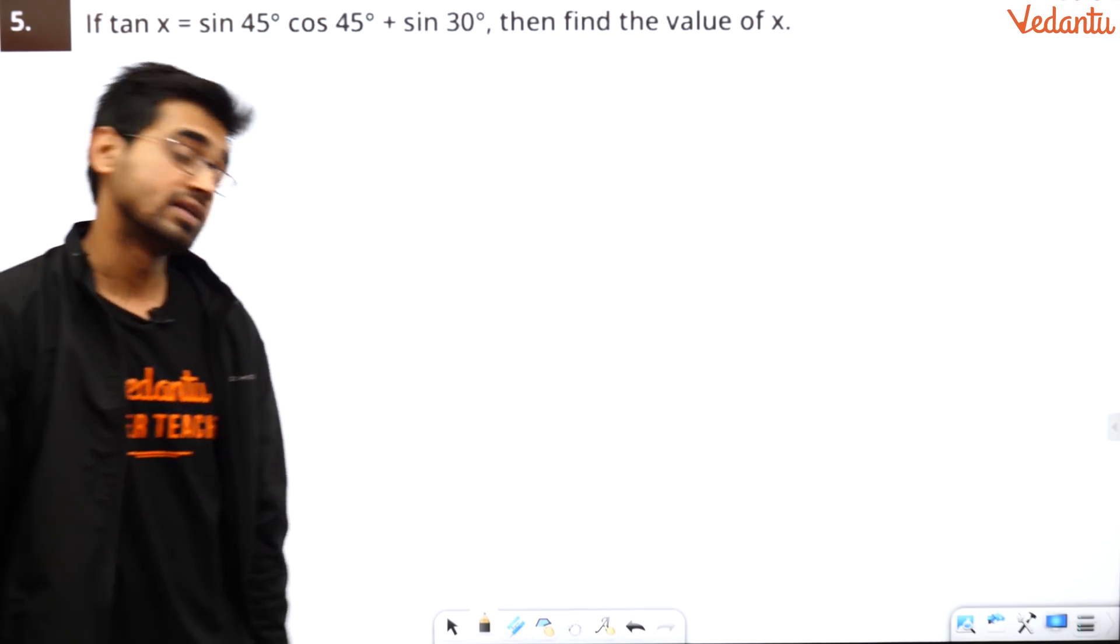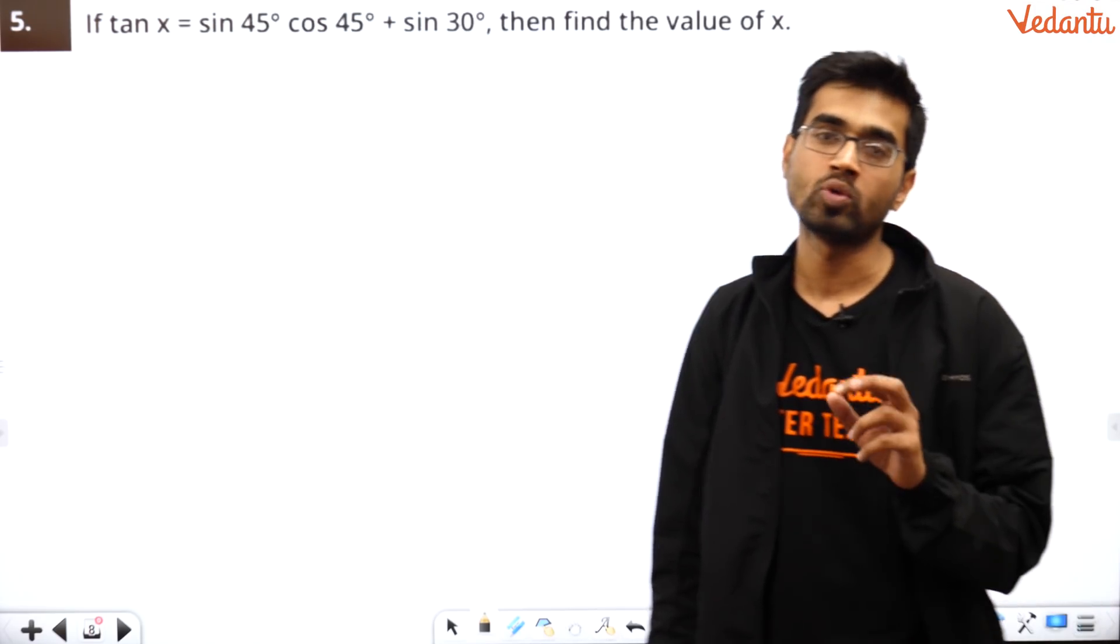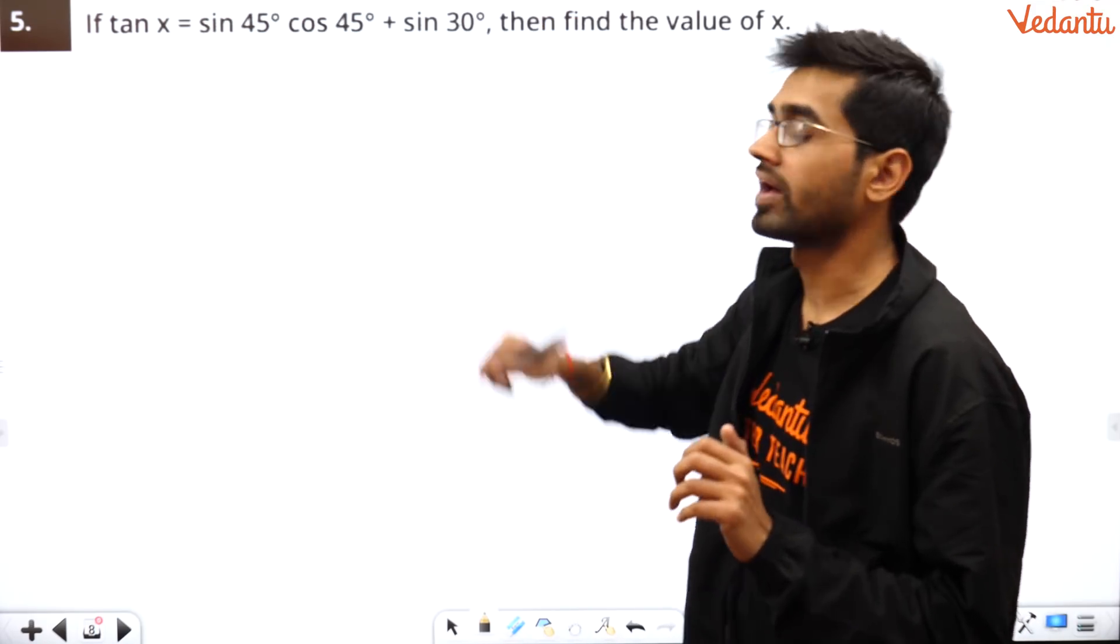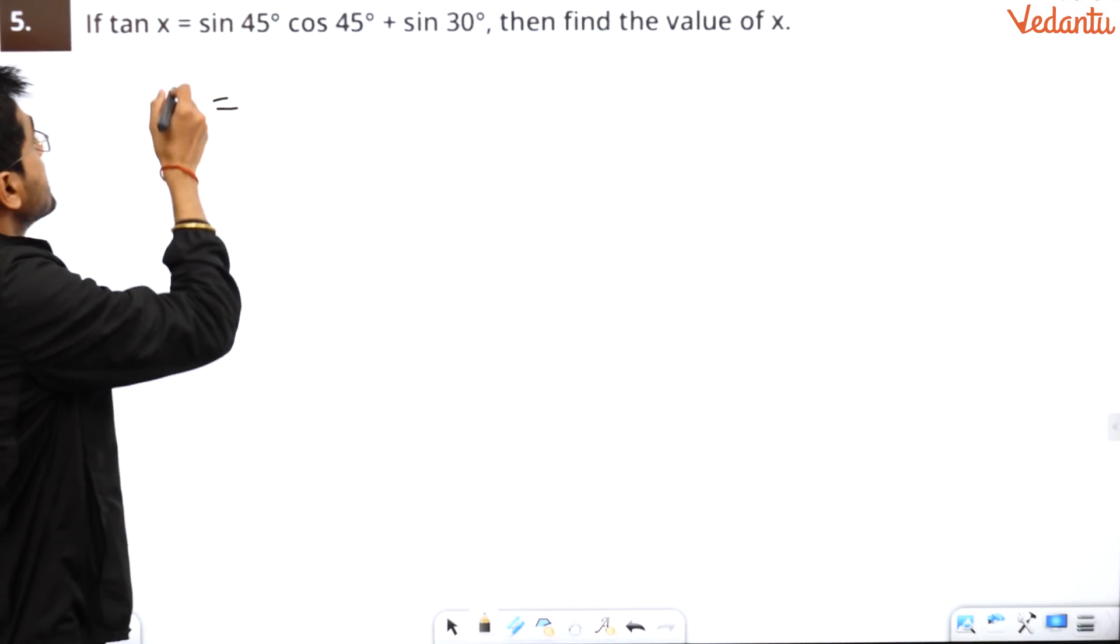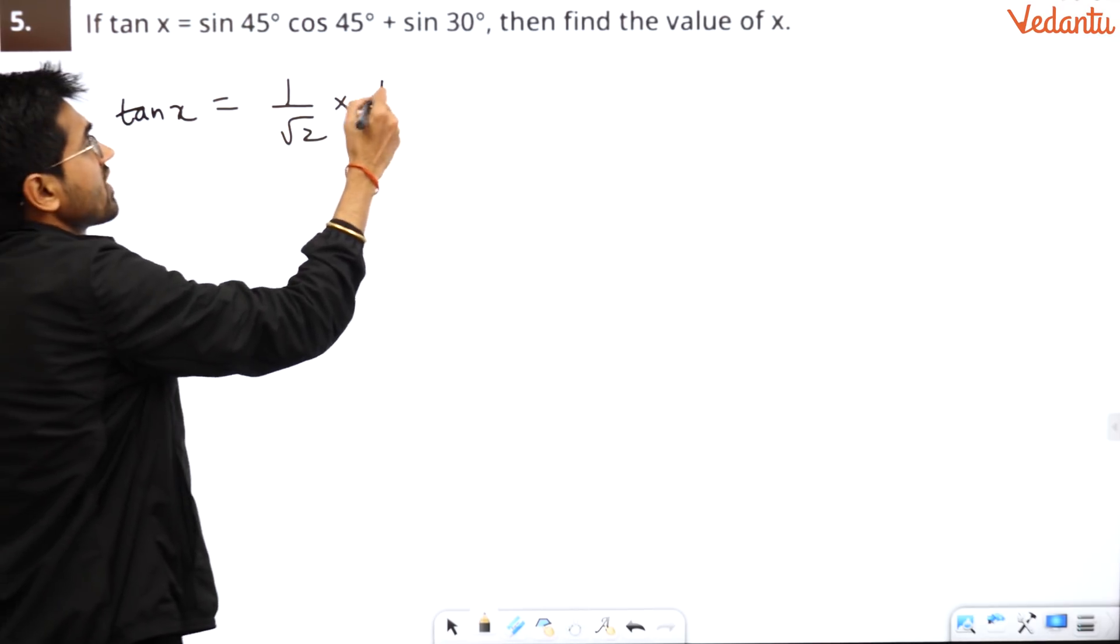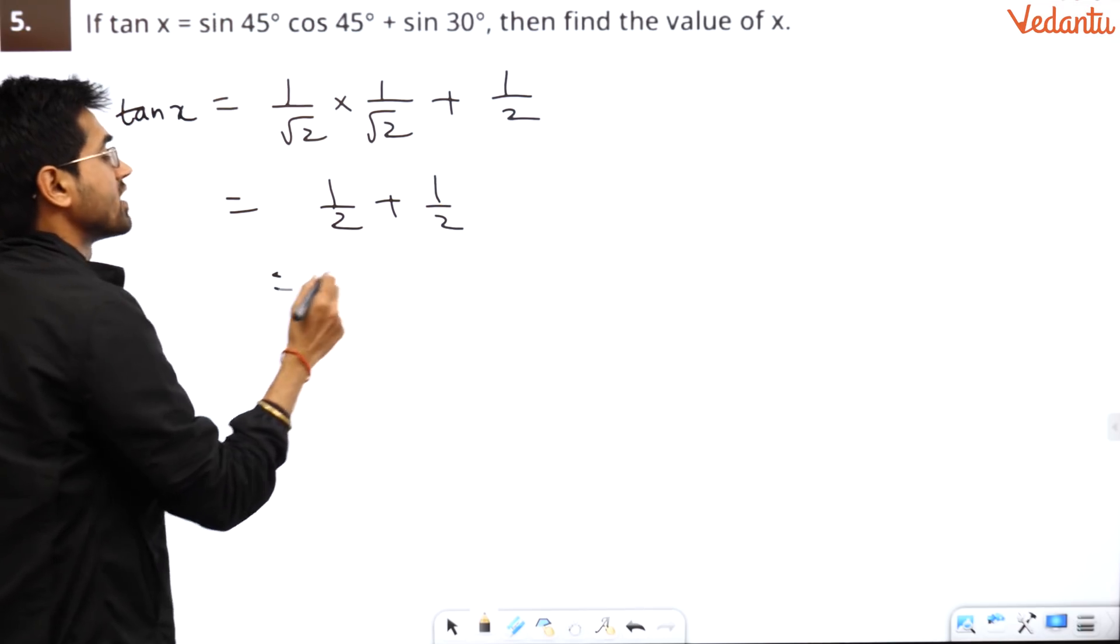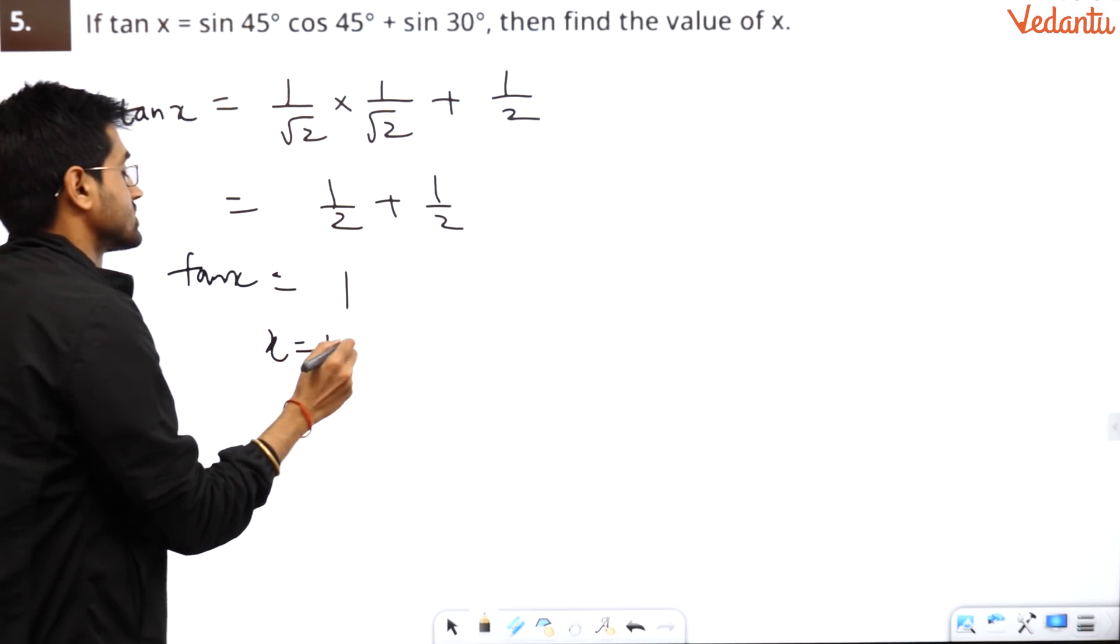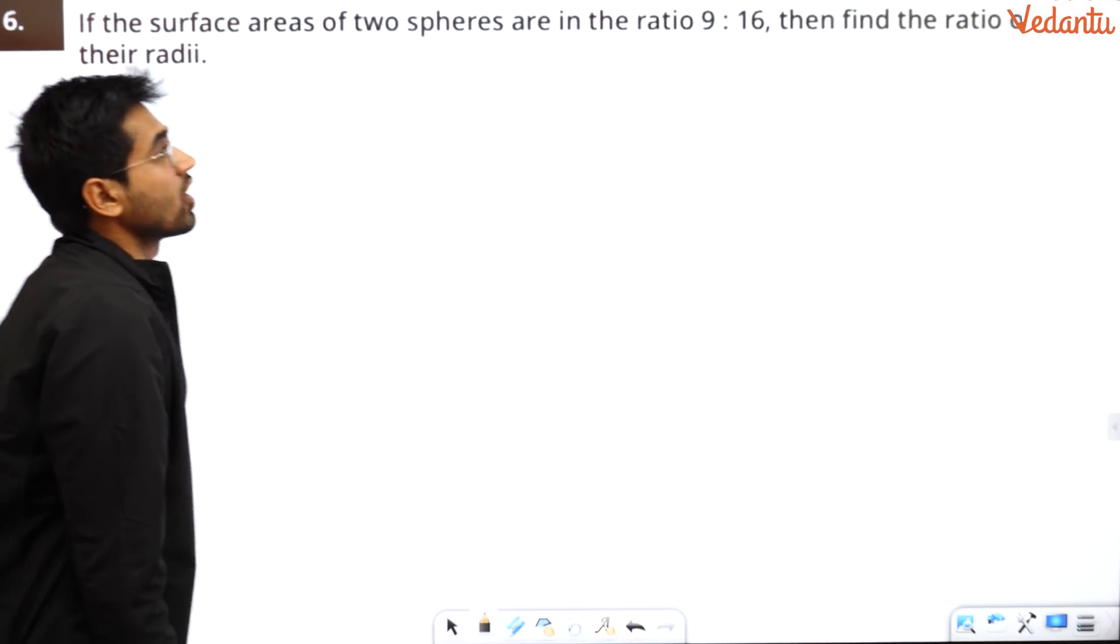Let's take up the next question. Now, tan x is equals to sin 45 by cos 45 plus sin 30. Then find the value of x. You just have to put the value of each angle and trigonometric ratio basically. So tan x is equals to sin 45 is 1 by root 2. Cos 45 is 1 by root 2. Sin 30 is 1 by 2. What do you get? 1 by 2 plus 1 by 2. What do you get? 1. When is tan 1 correct? 45 degree. So x is 45 degree. That is the answer and continue. Keep on going on. Don't worry. Don't panic.